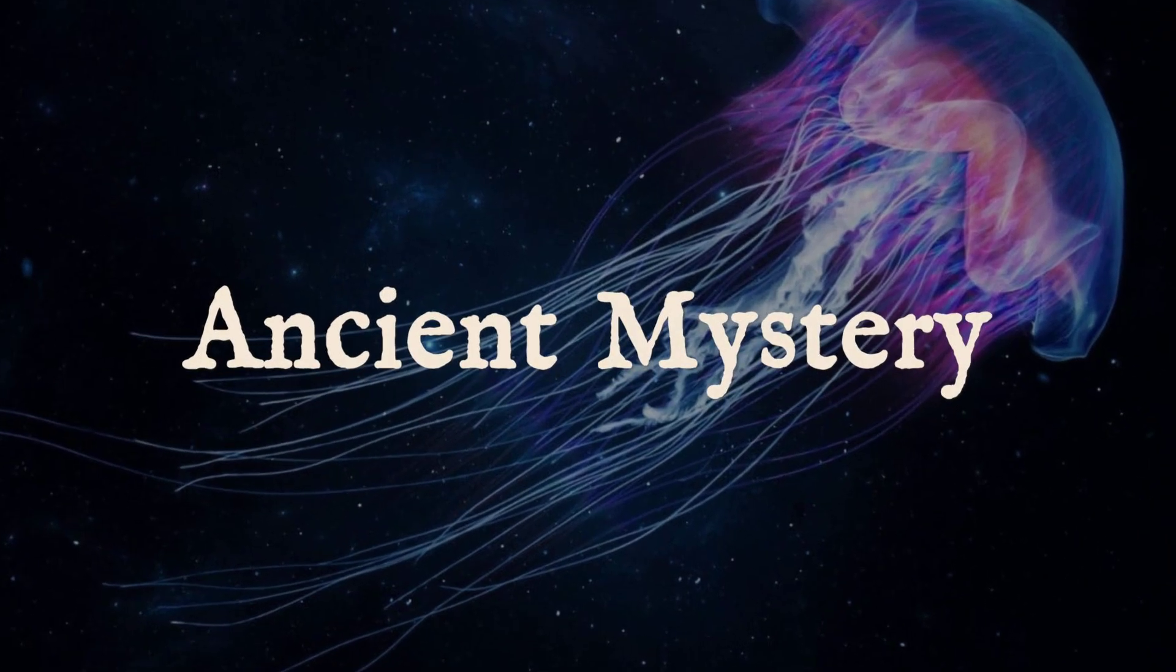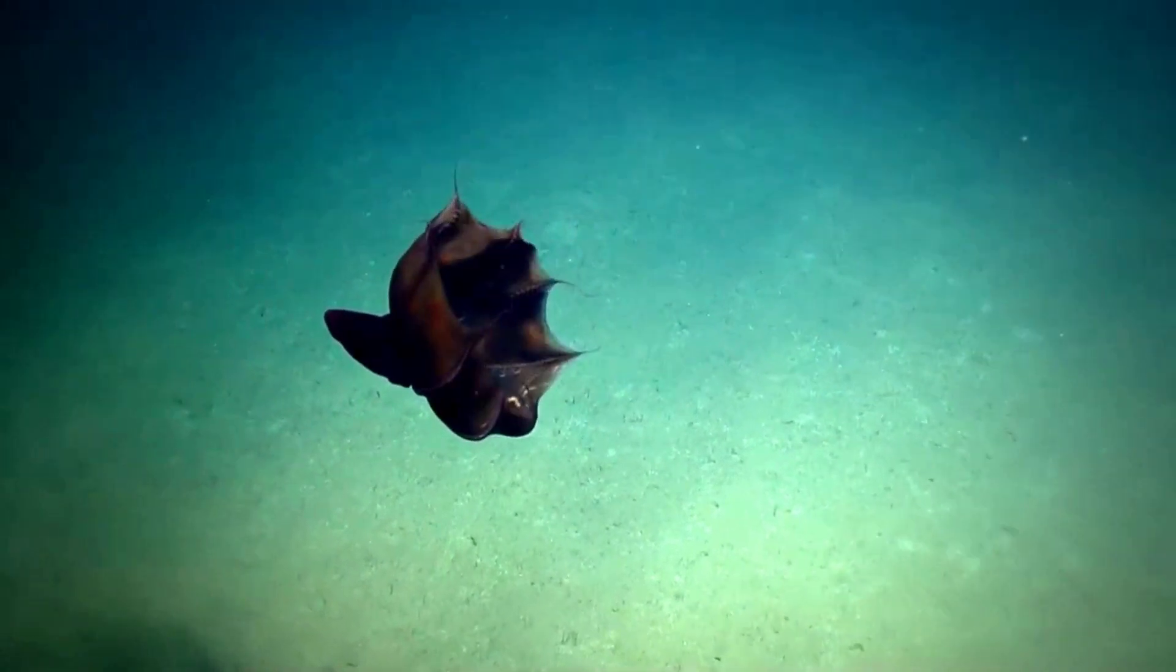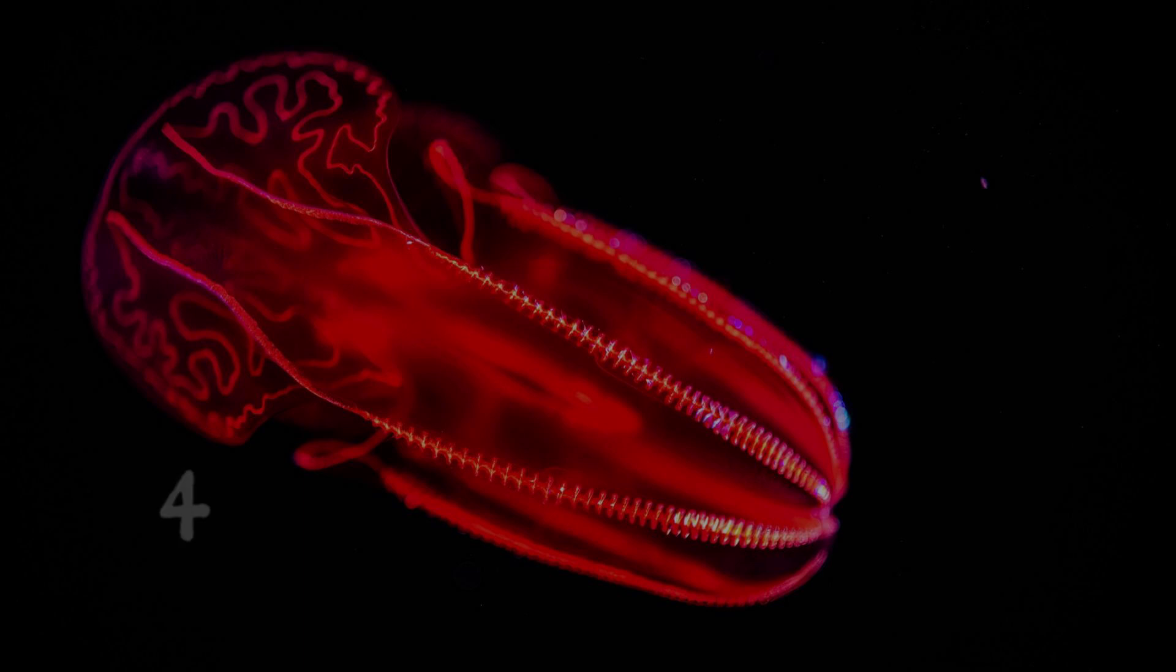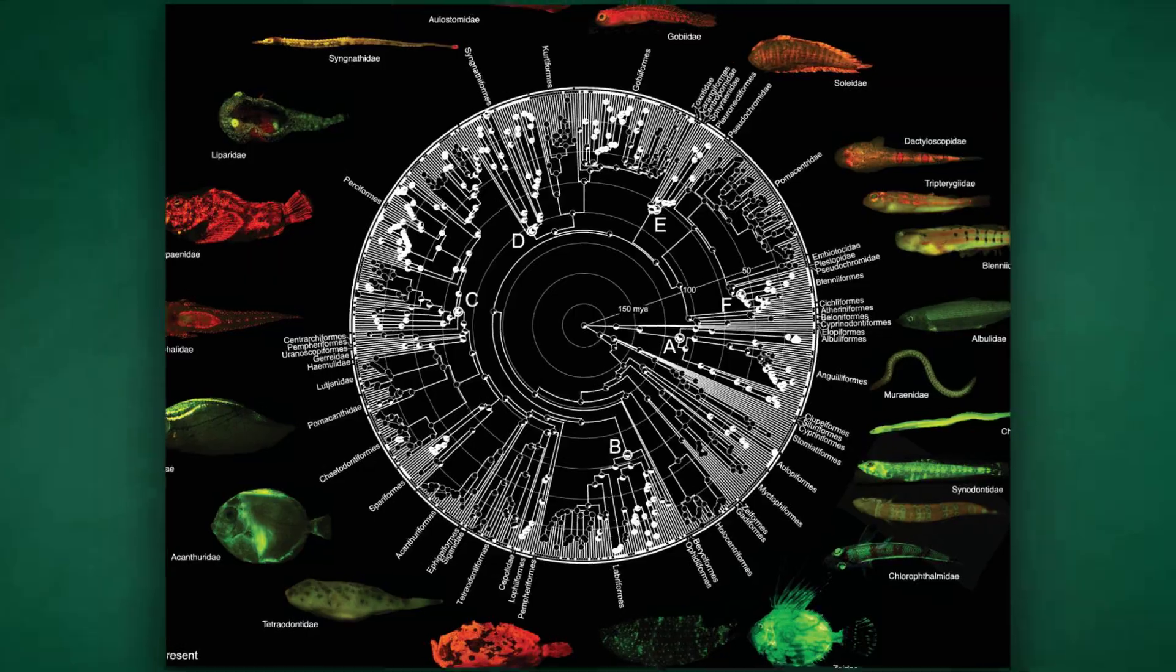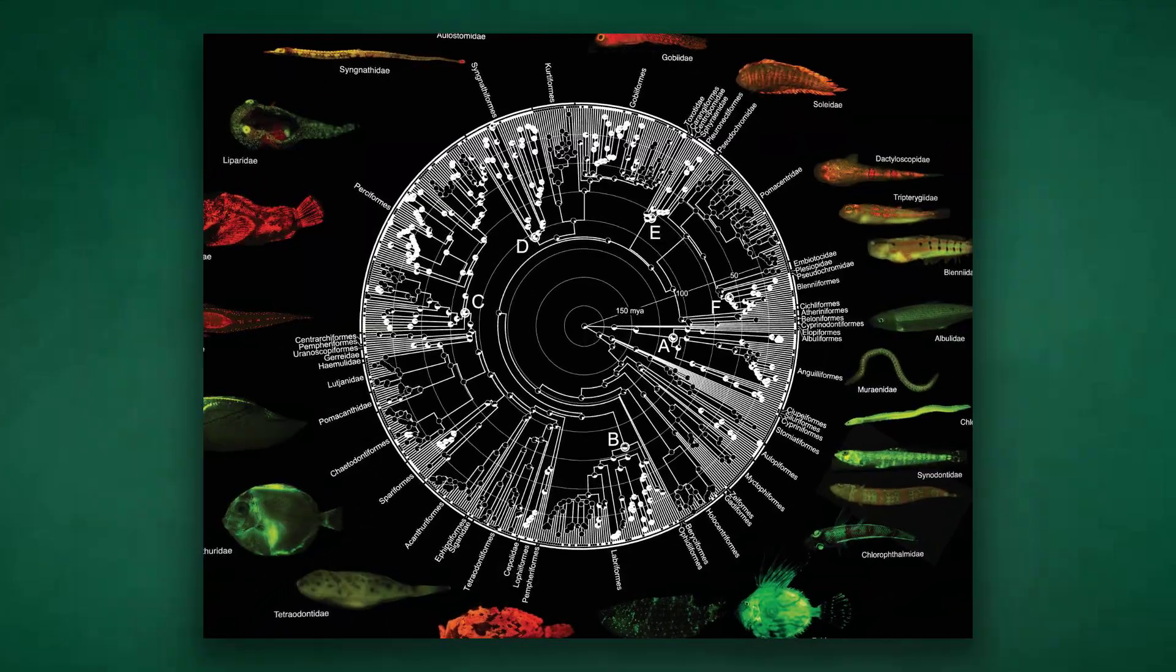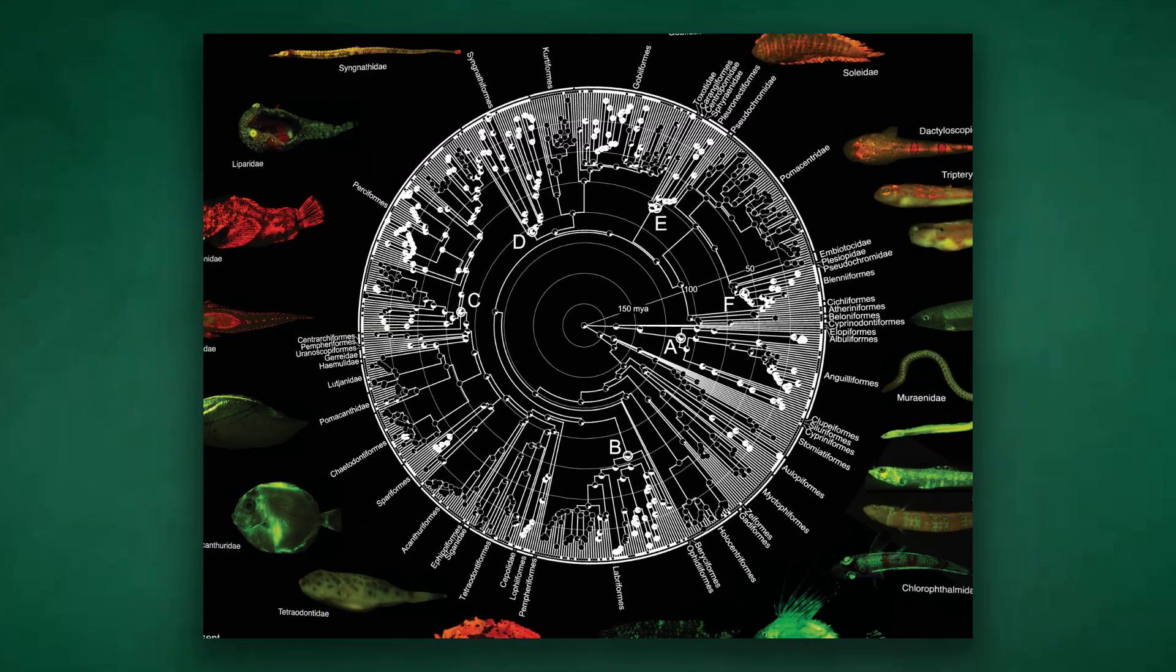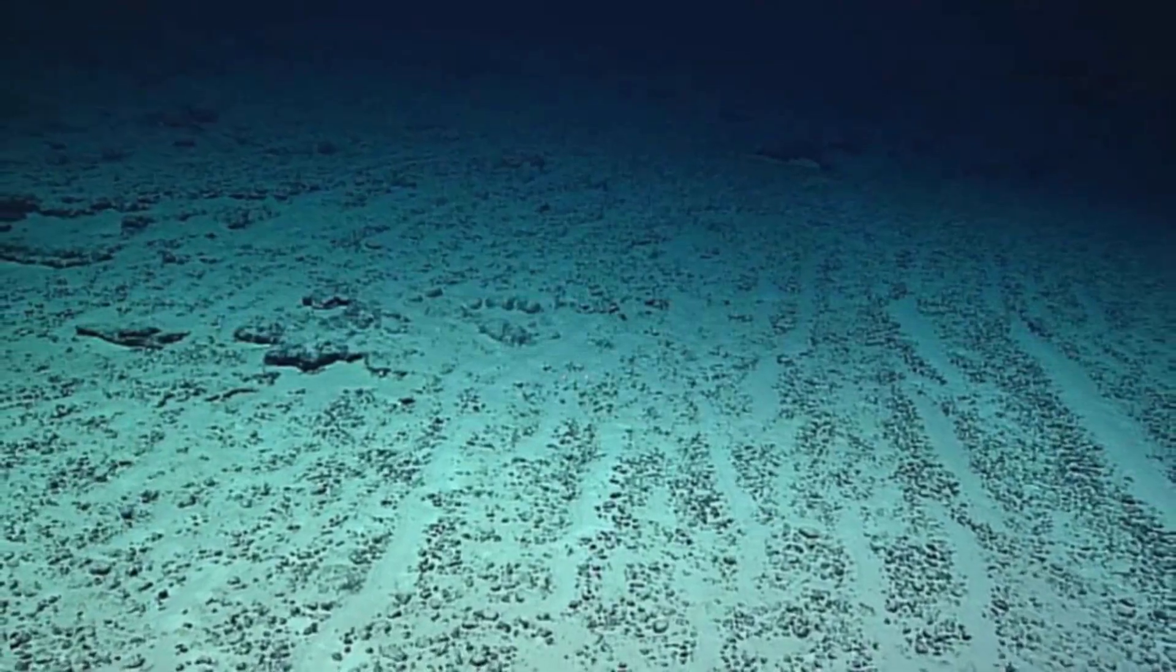Bioluminescence did not arrive in a single burst of innovation. Instead, it has surfaced again and again, scattered across the tree of life like constellations in the abyss. More than 40 separate lineages—fish, jellies, worms and even crustaceans—each found their own way to summon light from chemistry. This is not the product of a lone ancestor, but the result of evolution's relentless experiments, running for over 100 million years in the world's most hostile shadows.